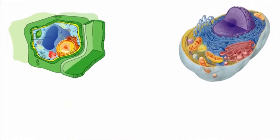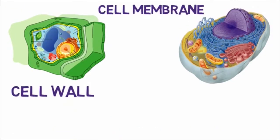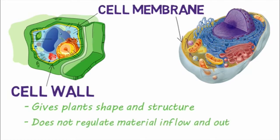Lastly we have the cell wall. While both plant and animal cells have cell membranes, only plant cells have a cell wall. This cell wall gives plant cells their shape and structure. However, the cell wall does not regulate inflow and outflow of molecules — that's still the job of the cell membrane.